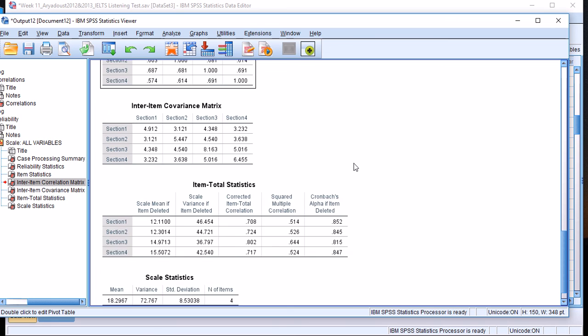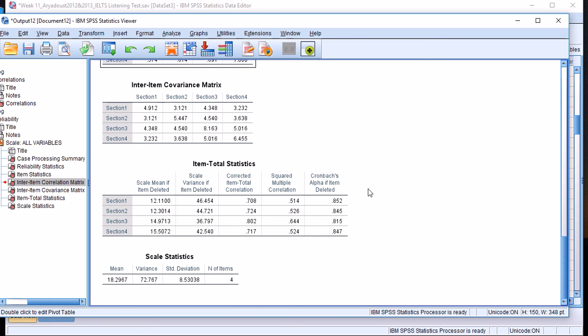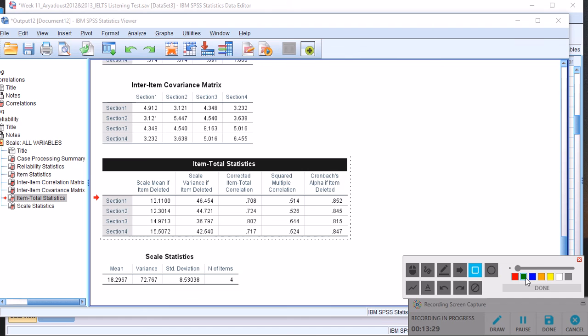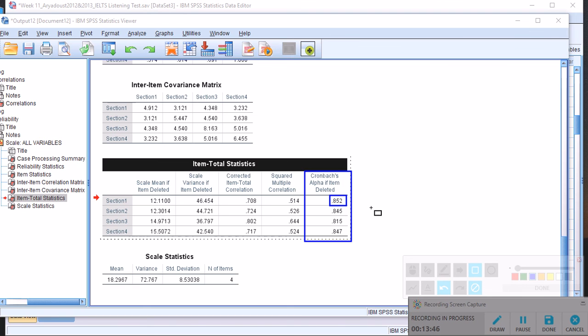Now we have this item-total statistics, and this is a very important and useful table. On the right-hand side, you can find the Cronbach's alpha if item deleted. If you delete section four, Cronbach's alpha will drop to 0.852, which is not a good idea, because the Cronbach's alpha was 0.876 or 0.877.